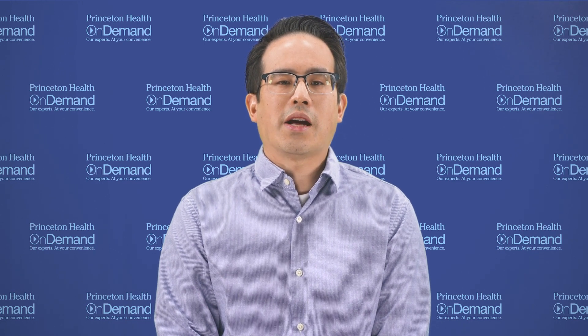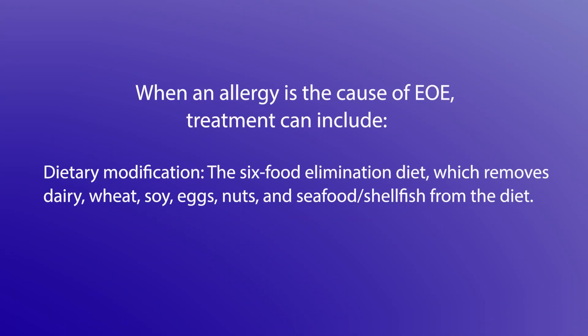If it's determined that an allergy is the cause of EOE, treatment can include dietary modifications such as the six-food elimination diet, which removes dairy, wheat, soy, eggs, nuts, and seafood and shellfish from the diet. The goal is to remove potentially allergenic foods and reintroduce them one at a time to identify the cause of the allergic reaction. Some patients may benefit from elemental diets that consist of amino acid-based formulas, which provide complete nutrition without triggering allergic reactions.